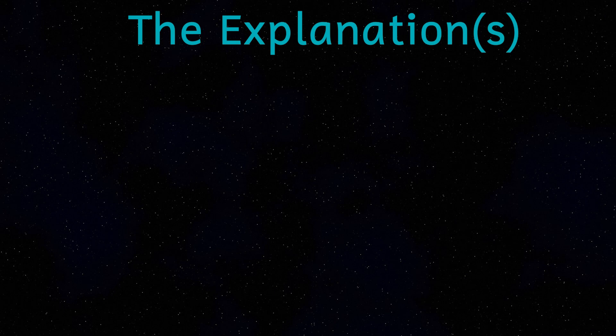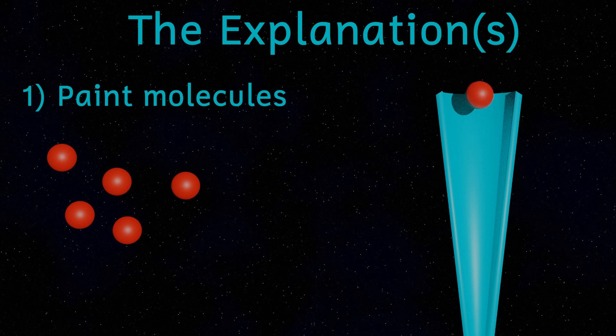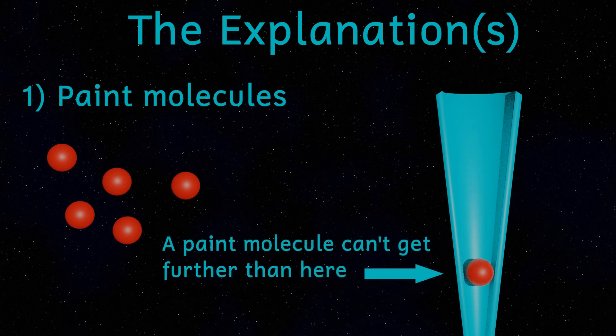So does this paradox have an explanation? Well, I guess actually it does. And there's a couple of ways to think about this. Firstly, let's assume that this object is real and that I filled it up with actual real paint. Paint is made from molecules and as the object got thinner and thinner and thinner, eventually it will become narrower than a paint molecule and so beyond that point, it will be impossible to paint any further. Hence, we could therefore quite easily paint the inside.